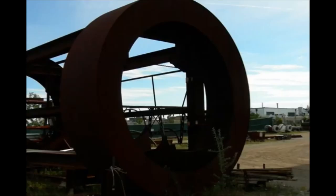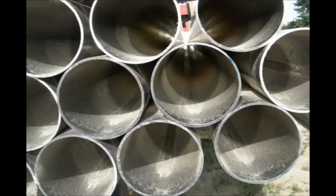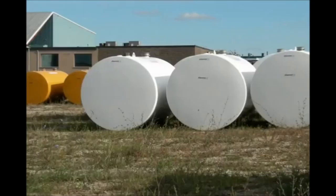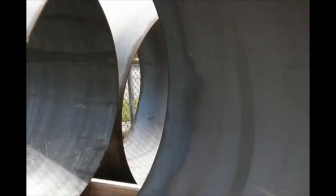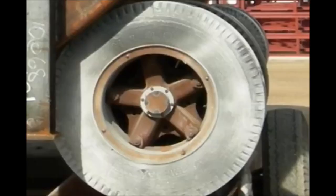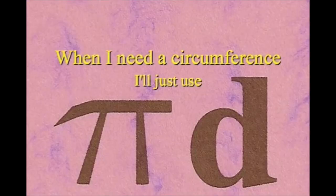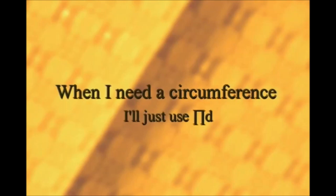It knows how to get around. It has a radius from center to rim. And its diameter's a line that goes from side to side while passing through the center, now isn't that simple. Pi r squared sounds like area to me, when I need a circumference, I'll just use pi d.